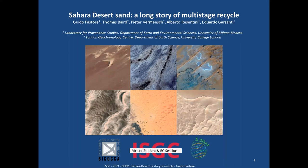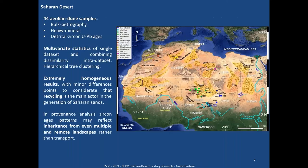Our work focuses on 44 samples that are analyzed by petrography, heavy mineral fraction analysis, and detrital zircon U-Pb ages with circulation. They are collected across the whole desert.